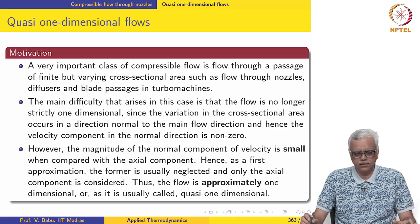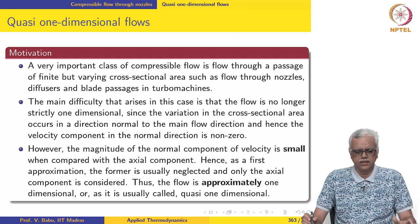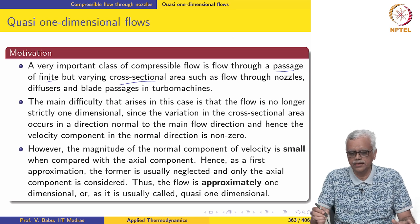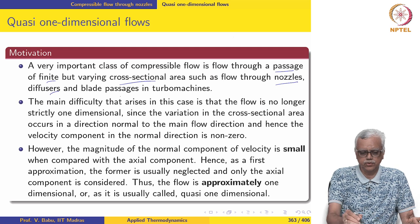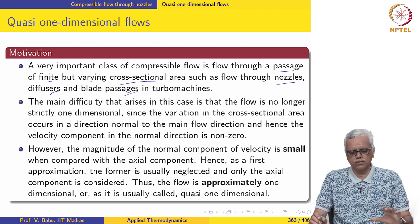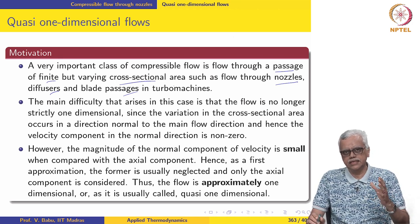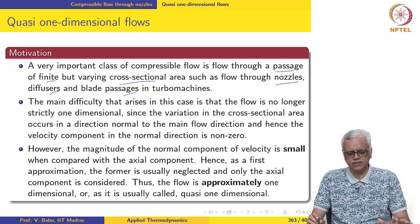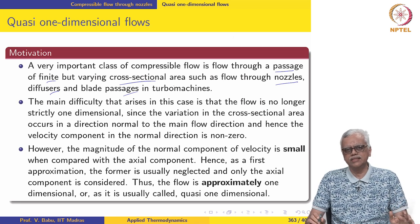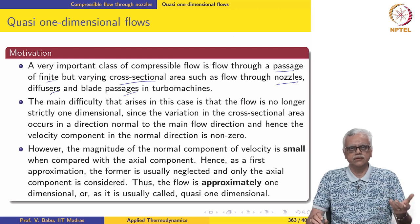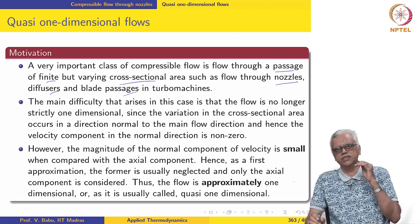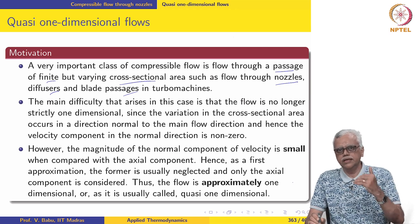In this lecture and possibly the next couple of lectures, we will be looking at compressible flow through a passage of finite but varying cross-sectional area, which is representative of flow through nozzles, diffusers, and blade passages in turbo machines. In whatever we have discussed so far, the area of the stream tube never really appeared in any of the calculations or derivations. We said it was one-dimensional flow, so the area of the stream tube could be thought of as arbitrary.